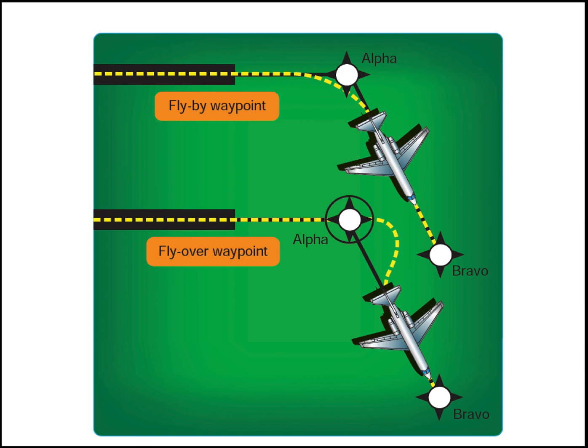First, what's fly-by and fly-over? A fly-by waypoint is something where you can use turn anticipation. A fly-over waypoint, you have to hit the waypoint before you actually turn. You can see here in the instrument procedures handbook how the fly-over waypoint has a circle around it using standard symbology.